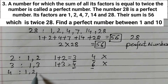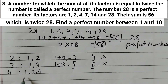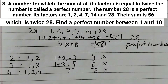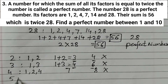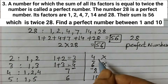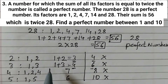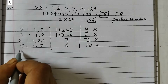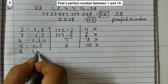Factors of 4: 1, 2, and 4. Sum = 1+2+4=7, and 2×4=8. Since 7≠8, not a perfect number. Factors of 5: 1 and 5. Sum = 1+5=6, and 2×5=10. Since 6≠10, not a perfect number.